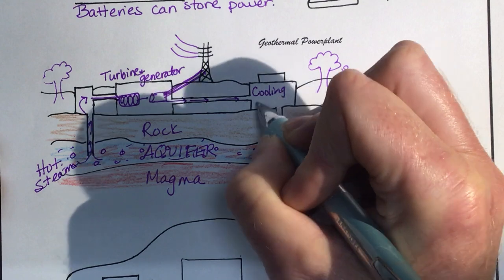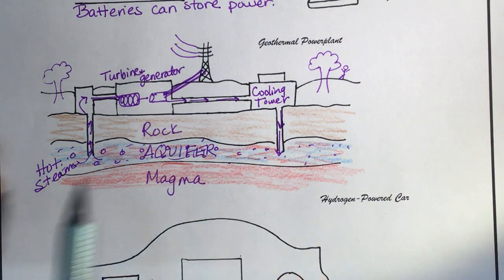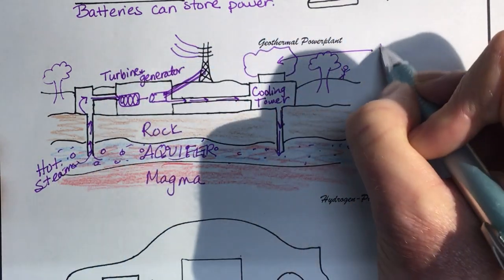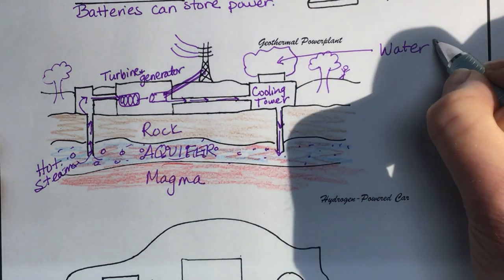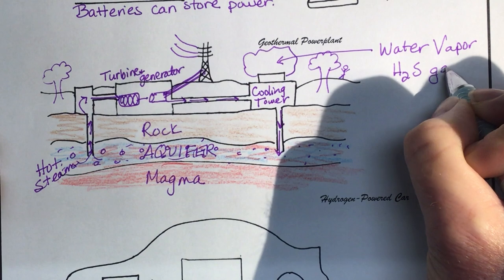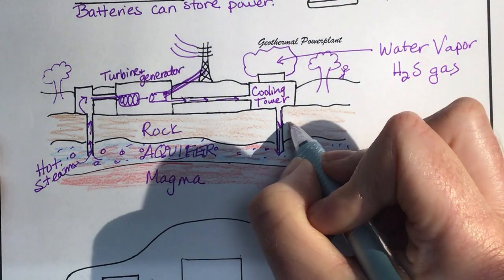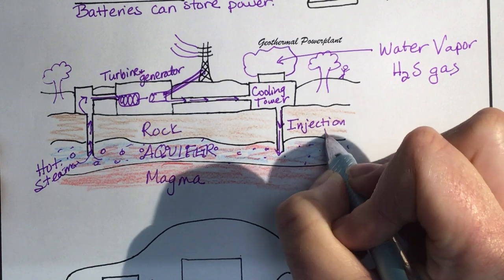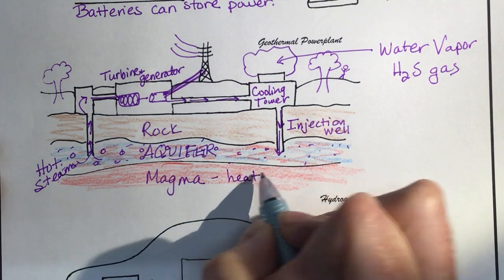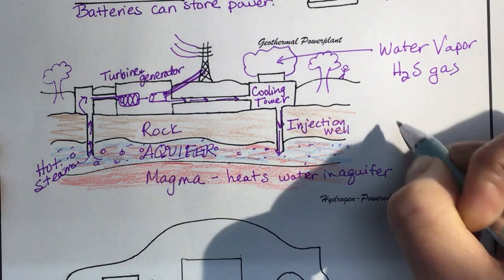The water must go to a cooling tower and then it's pumped back down into the aquifer. The cool water is going to heat up again from the magma. This is called an injection well here, so it's going to inject the water back into the aquifer. Let's just put down here the magma heats the water in the aquifer.